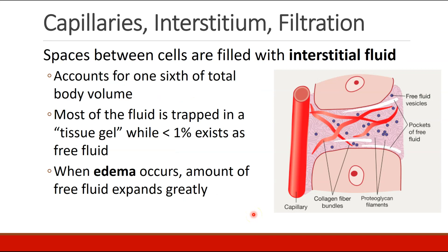The spaces between cells are filled with something called interstitial fluid. This accounts for about a sixth of your total body fluid volume, and most of the fluid is trapped in a tissue gel.